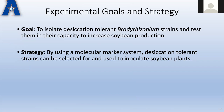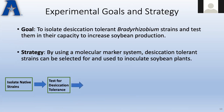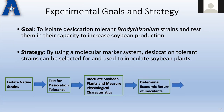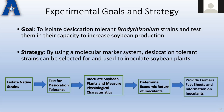Our goal for this experiment was to isolate desiccation-tolerant Bradyrhizobium strains and test their capacity to increase soybean production. Our strategy: we designed a molecular marker system to screen a large collection of isolates and determine their desiccation tolerance. Once we find strains with intrinsic desiccation tolerance, we take them back into the field, inoculate soybean plants, measure physiological characteristics, and ultimately determine the economic return of that inoculant. We can do this across different regions and provide farmers with fact sheets and information — educating farmers on how to create a more sustainable agricultural approach is our main goal.